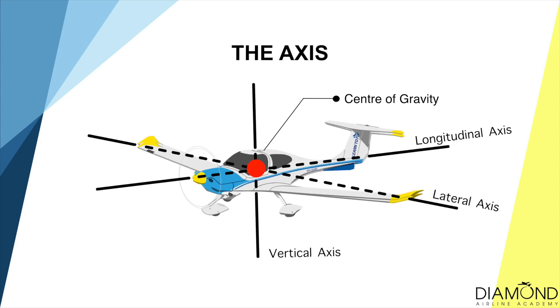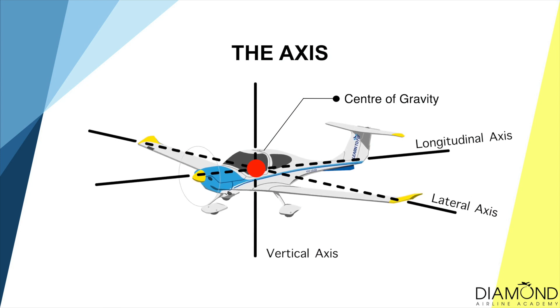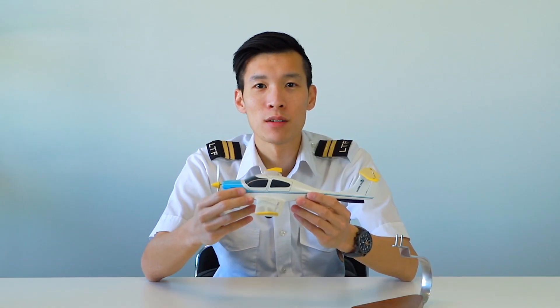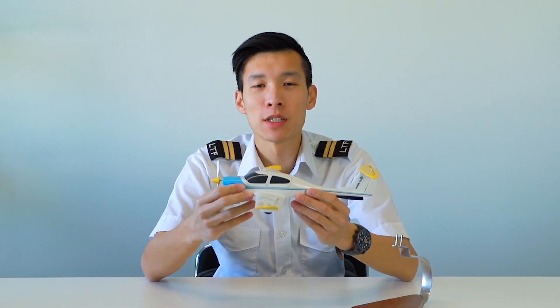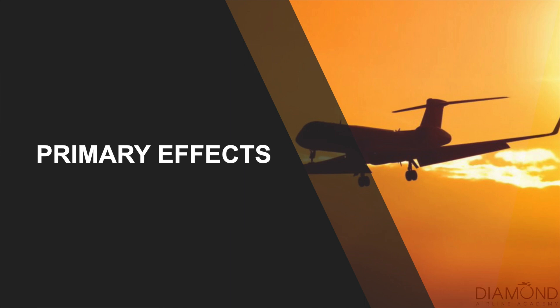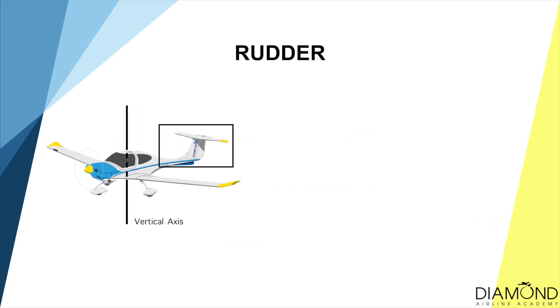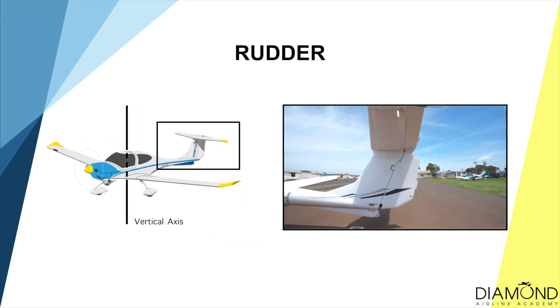The centre of gravity is the point around which the airplane will rotate when it is flying. Because we have three axes, we have three different sets of controls on the aircraft. The first controls movement around the vertical axis — it is the rudder. The rudder is at the tail section of the airplane; it is the vertically moving part.